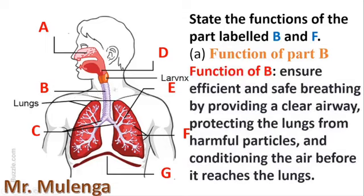Here is our second question. State the functions of the parts labeled B and F. So B is the trachea. The main function of the trachea is to ensure efficient and safe breathing by providing a clear airway, protecting the lungs from harmful particles, and conditioning the air before it reaches the lungs.